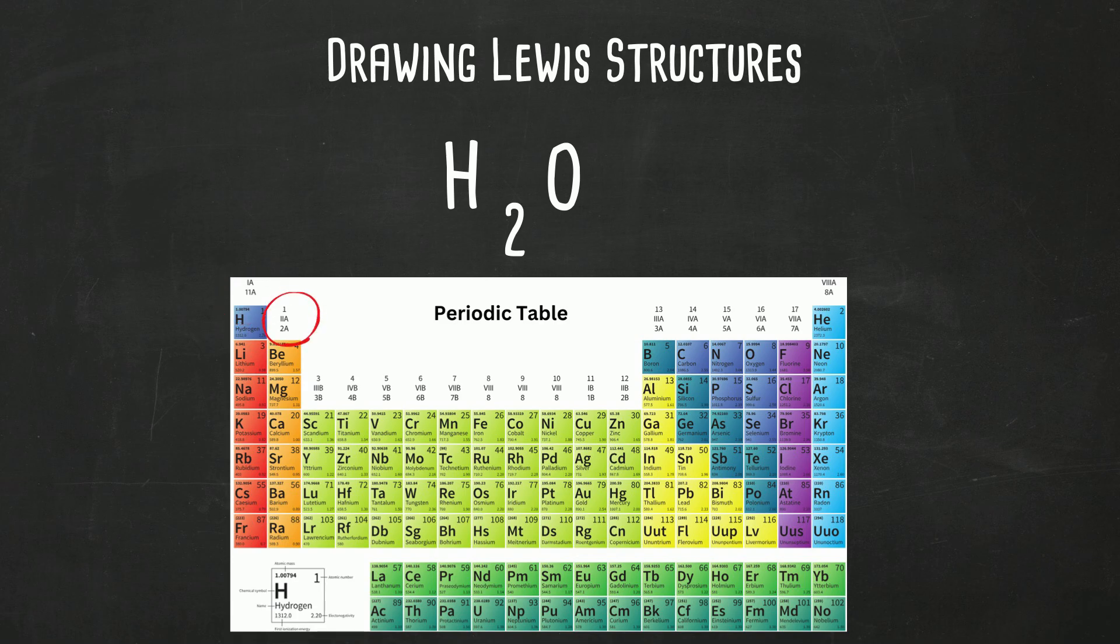Group two has two. Group three has three. We're going to skip over the dreaded transition metals. Group 14 has four. Group 15, five. And I think you got the pattern. Group 18 has eight.